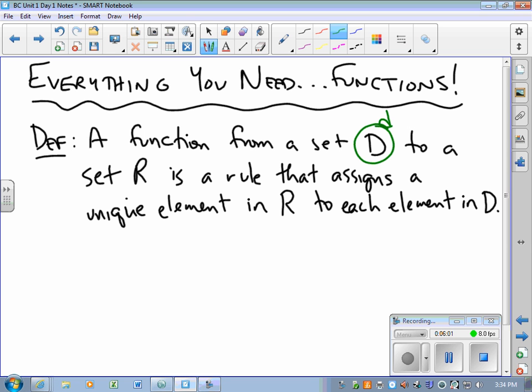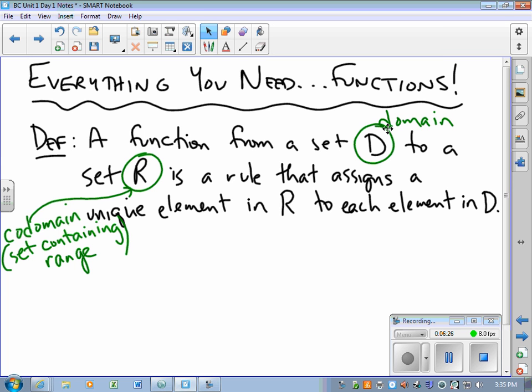Vocabulary: D is called the domain—it's the set of all x values, first values, you name it. The set R is the codomain. The codomain is the set that contains the range. It is not the range, it is the codomain.